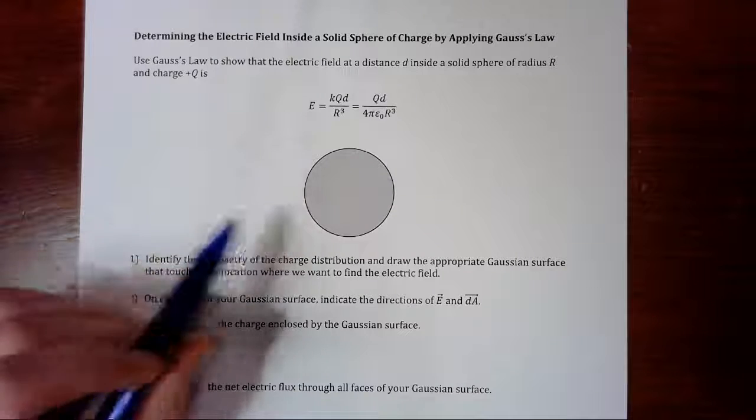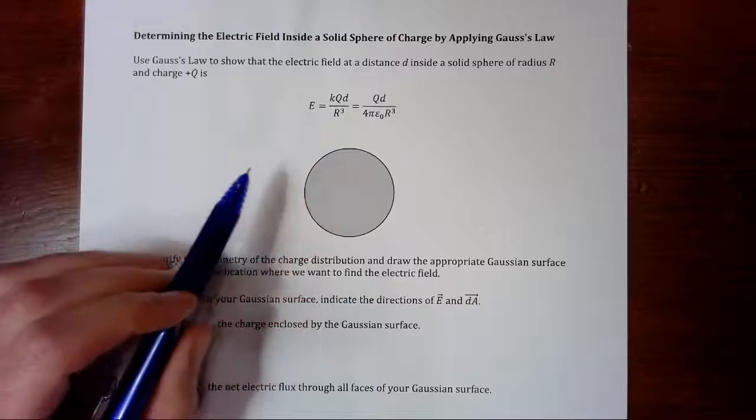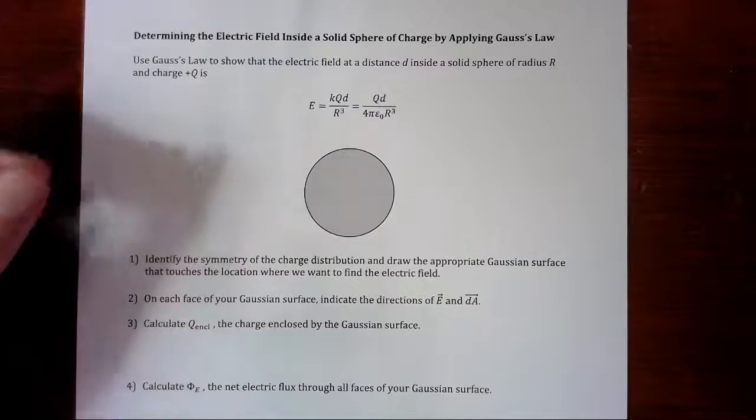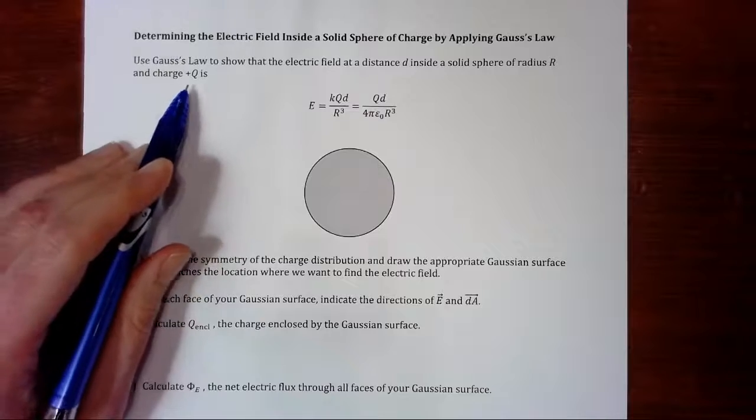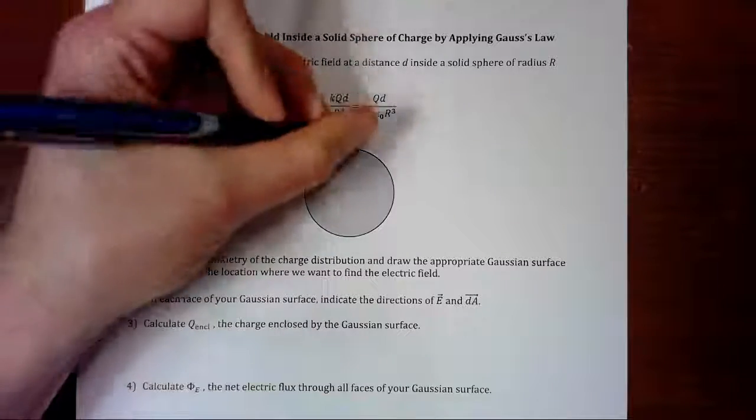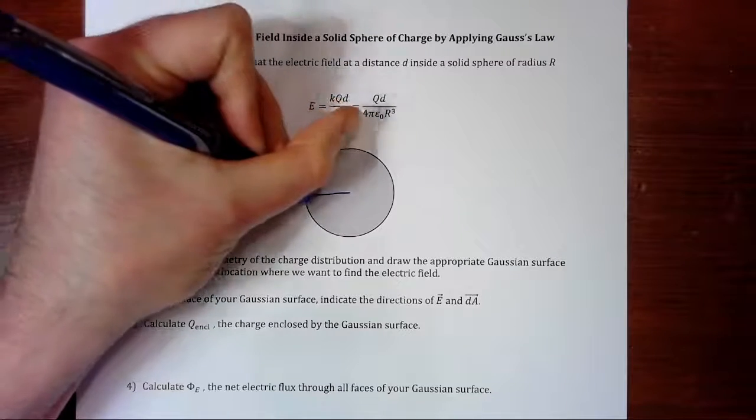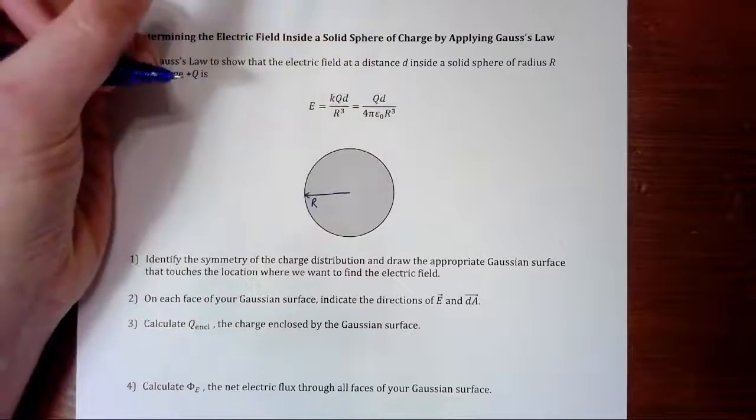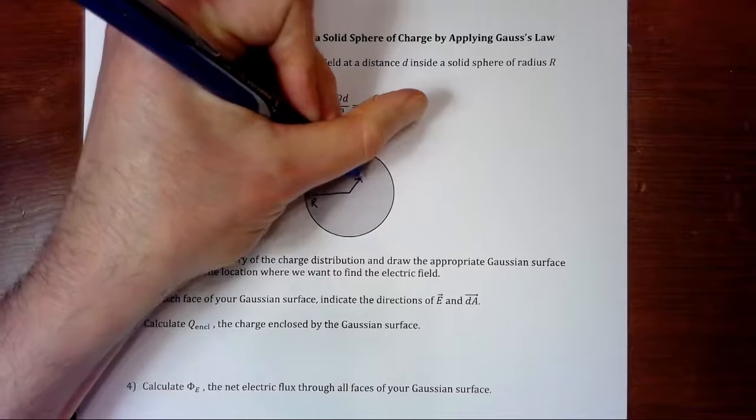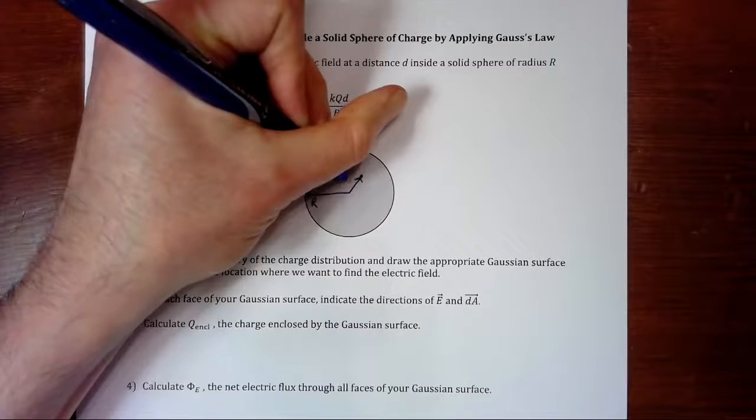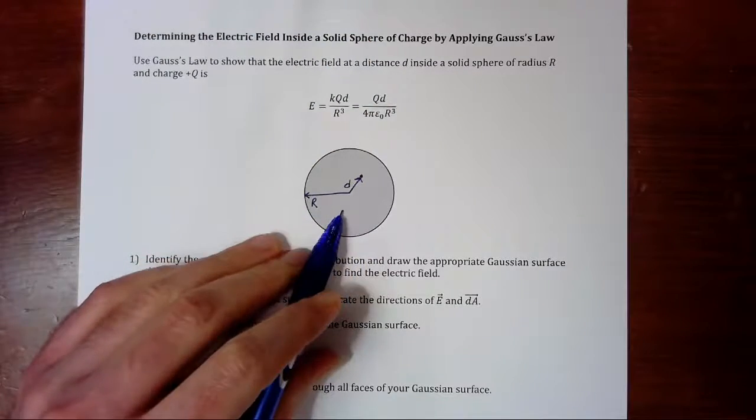So we've got a solid sphere. It has a charge Q, it has a radius big R, and we want to find the electric field at some distance d inside the sphere. Let's just label a few things. The sphere itself has radius big R, but we want to find the electric field at some distance d away from the center, but still inside the sphere.